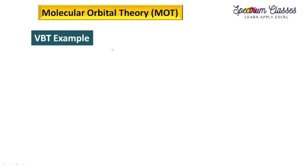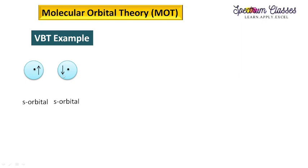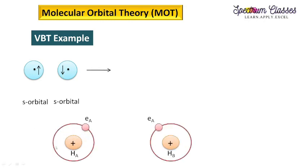Before discussing molecular orbital theory, I will give you a comparative view of valence bond theory and molecular orbital theory. Suppose we have two s orbitals of hydrogen atoms — one hydrogen atom Hₐ and a second hydrogen atom H_b. Please do not get confused with the downward arrow; it is drawn just for convenience. The nucleus has an electron revolving about it, and Hₐ and H_b are just designations to differentiate between the two hydrogen atoms.